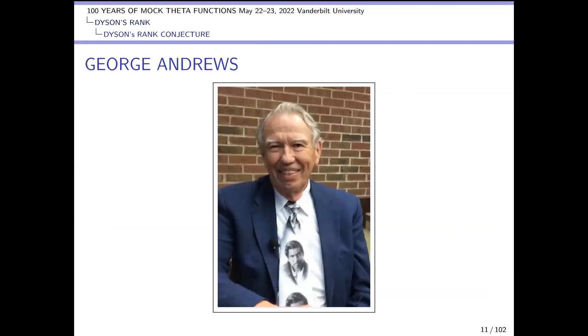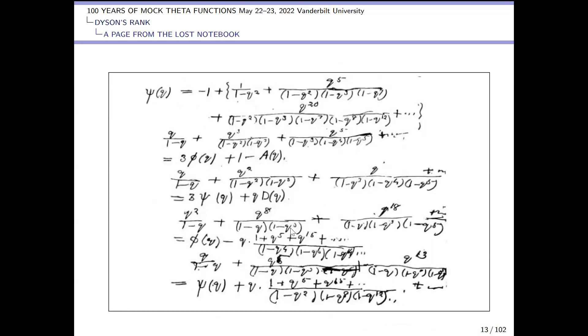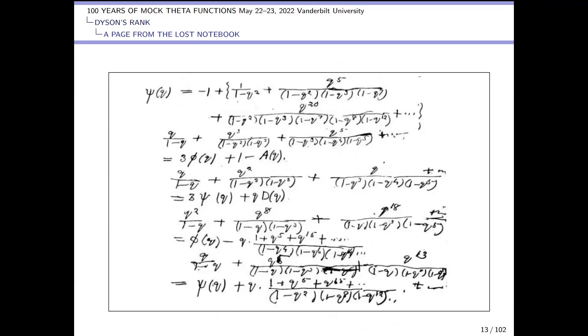When I was a PhD student at Penn State, George gave me this page to figure out. This equation here for little f is basically the p-dissection of the rank function where you put z equal to a fifth root of unity. This function here is actually one of the fifth order mock theta functions. You have an identity involving phi and psi, and if you look back at this identity you'll see phi and psi in this equation. So what that means is that this fifth order function is somehow related to the rank mod 5 — of course Ramanujan didn't know Dyson's rank and he didn't have a combinatorial interpretation.